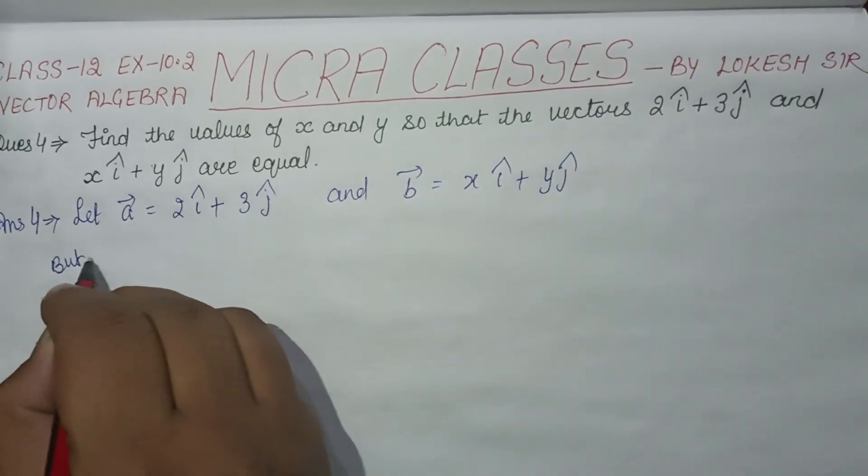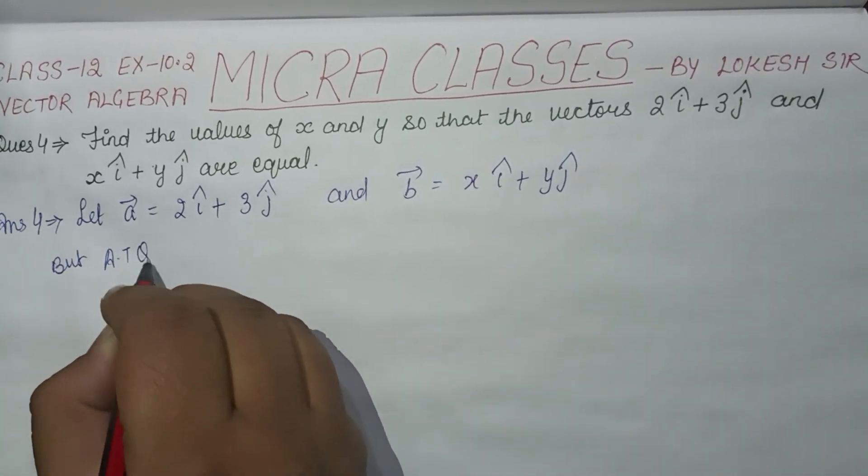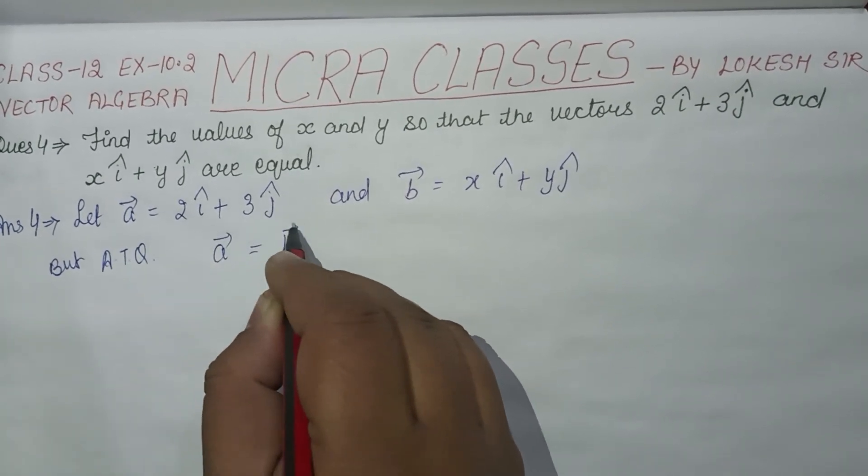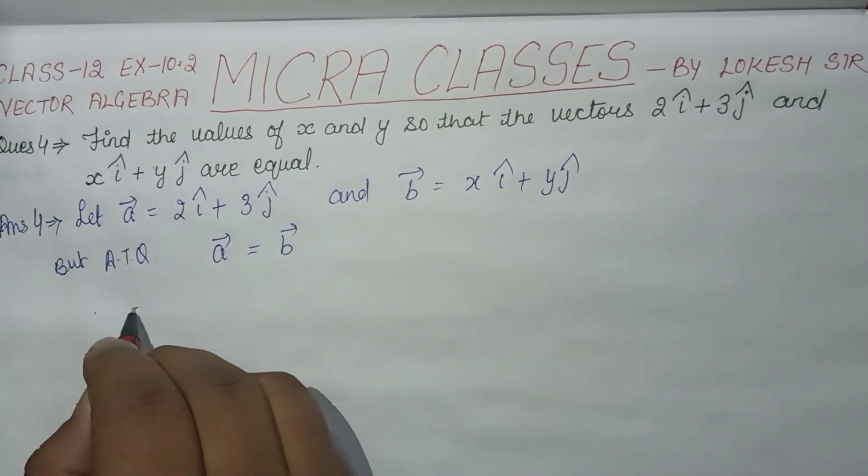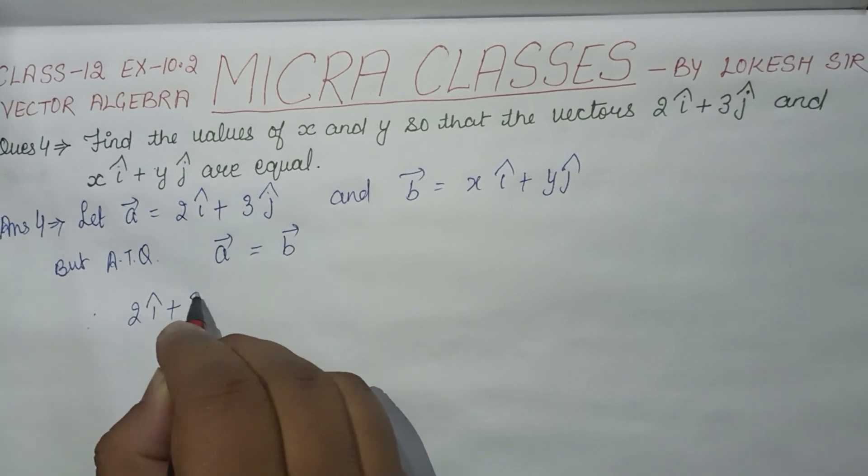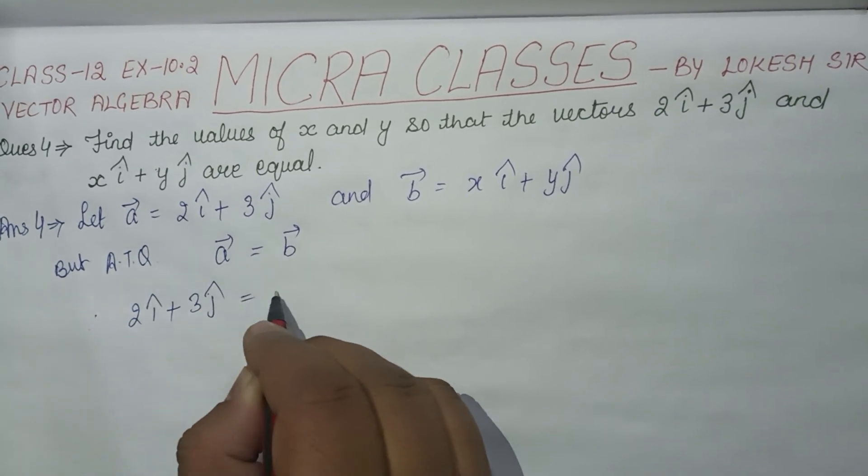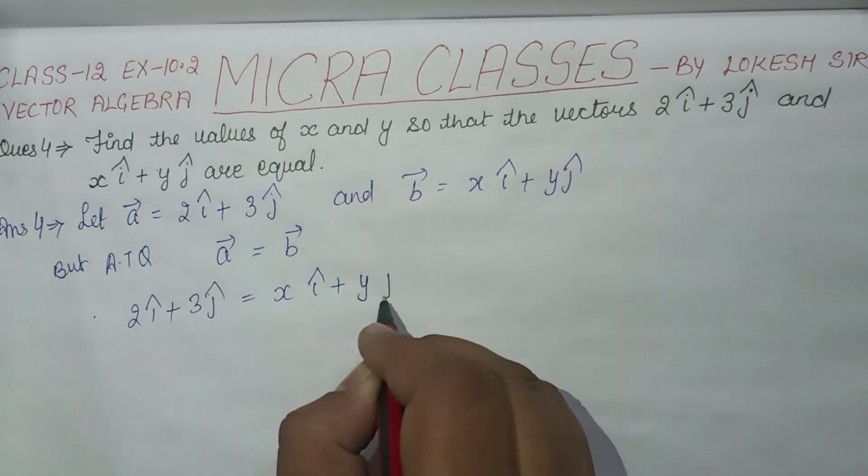According to the question, vector A is equal to vector B. Therefore, 2i cap plus 3j cap is equal to x i cap plus y j cap.